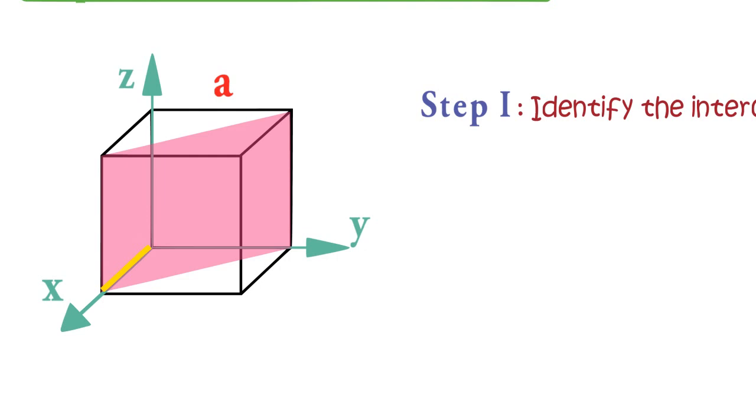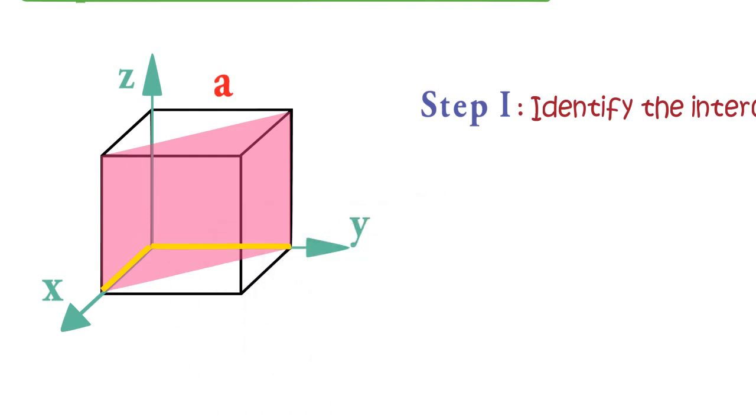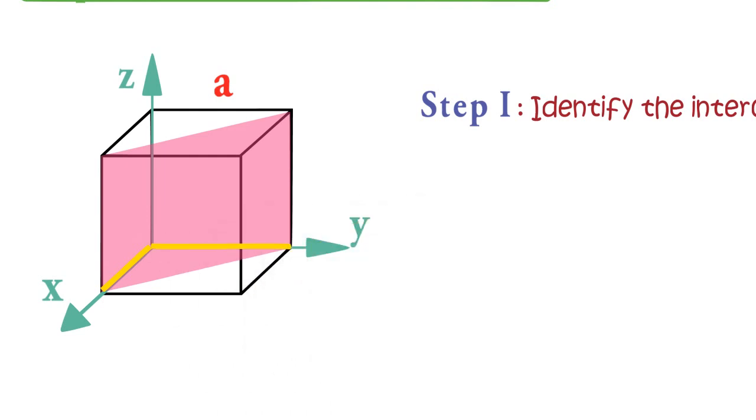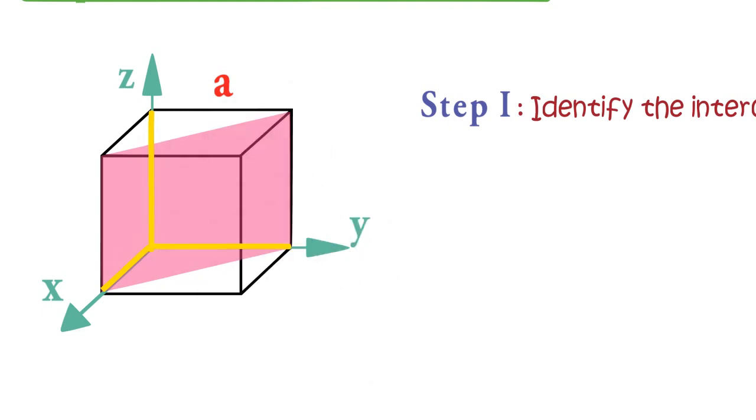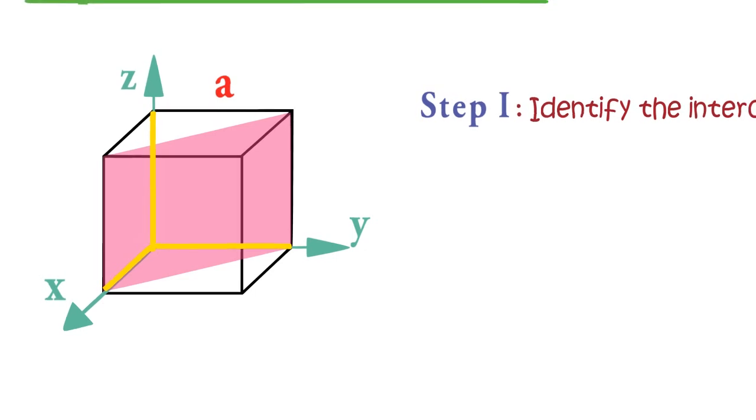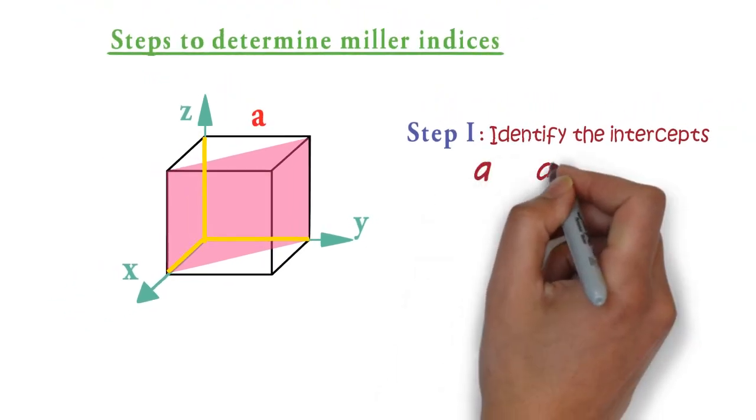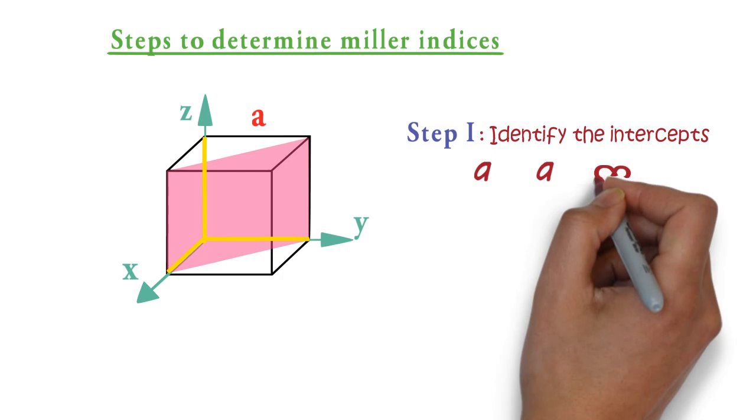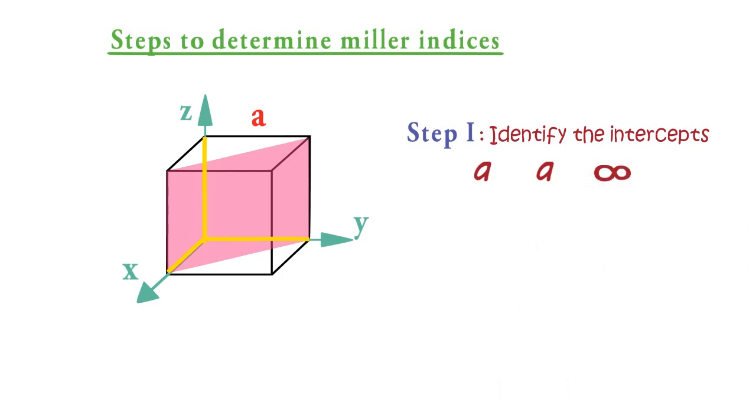In this case, intercept in x direction is a, in y direction also it is a, and the plane is parallel to the z axis so it will intersect the z axis at infinity. So we have now intercepts equal to a, a, and infinity for x, y, and z axis respectively.